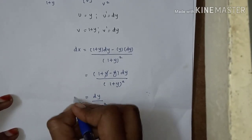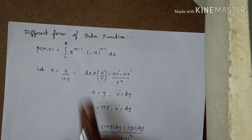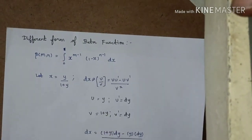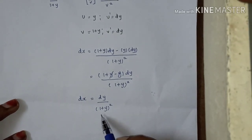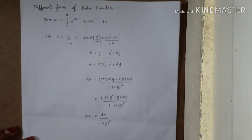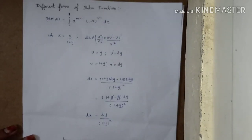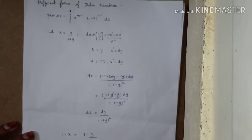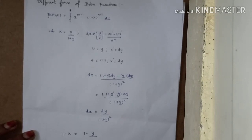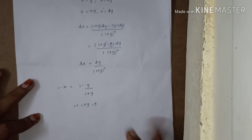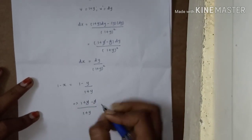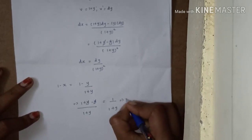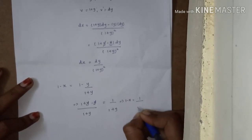So dx equals dy divided by 1 plus y whole square. Next, we find 1 minus x: 1 minus x equals 1 minus y divided by 1 plus y, which gives 1 plus y minus y divided by 1 plus y. The y terms cancel, so 1 minus x equals 1 divided by 1 plus y.